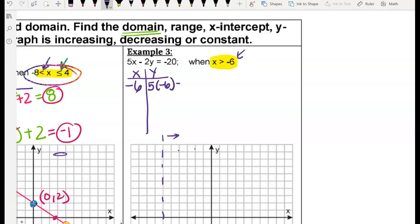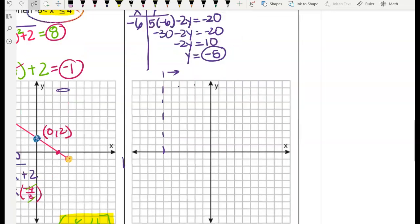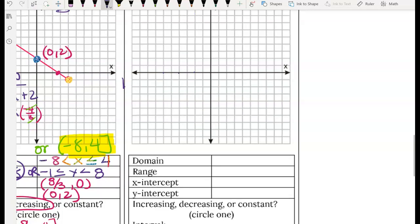5 times negative 6 minus 2y equals negative 20. 5 times negative 6 is negative 30, minus 2y equals negative 20. We are going to add 30 to both sides. So it will give us negative 2y equals positive 10. Divide both sides by negative 2. So y will give us a negative 5. So when x is negative 6, y is immediately negative 5. And I'm going to erase some of my marks here so I can plot. Negative 2, 4, 6. Go down negative 5, 2, 4, 5. And we know it's an open circle.